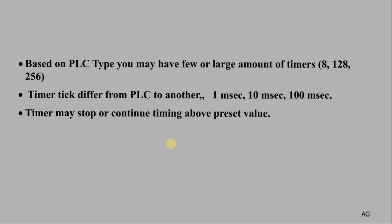Three key points about timers: first, how many timers a PLC supports depends on the CPU — a given CPU may allow 8, 128, or 500 timers. Second, timer resolution varies: 1 ms, 10 ms, or 100 ms per tick, again based on the CPU. Third, whether the timer continues counting after reaching the preset value also depends on your PLC model and CPU.